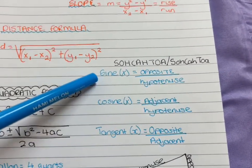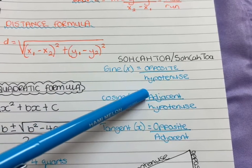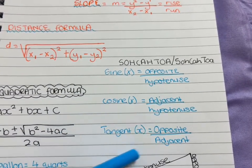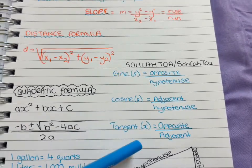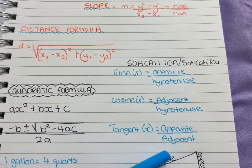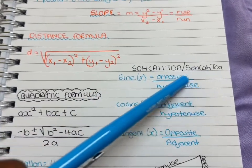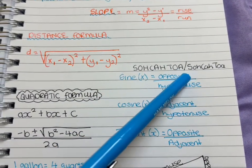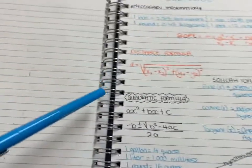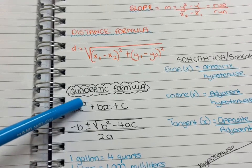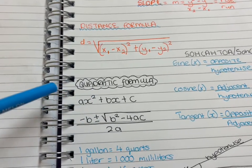This one is the SOHCAHTOA. I know you all have heard it before. Sine is opposite over hypotenuse, cosine is adjacent over hypotenuse, tangent is opposite over adjacent. Just make sure you know that. That's the simplest formula to remember instead of writing all of this down.